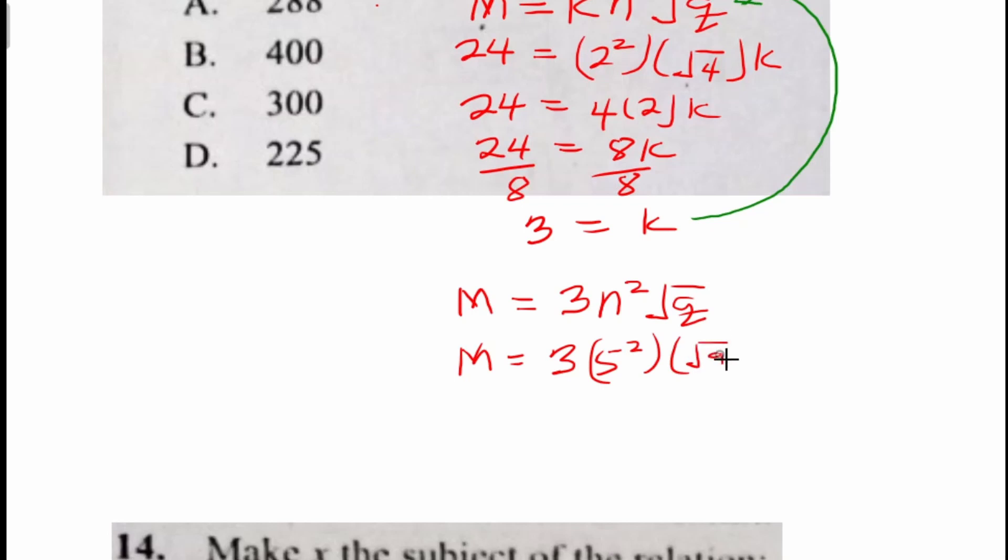So M equals 3 multiplying 5 squared then multiplying the square root of 9. And this gives us 3 times 25 times 3 is 225. And that is option D.